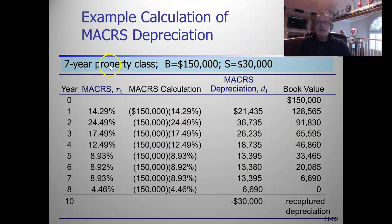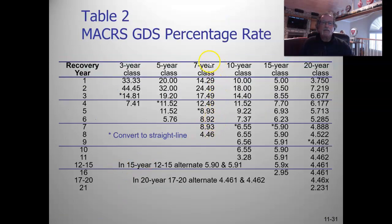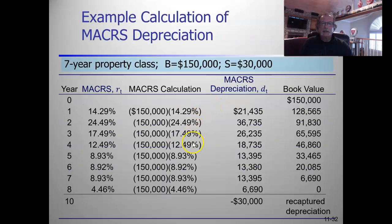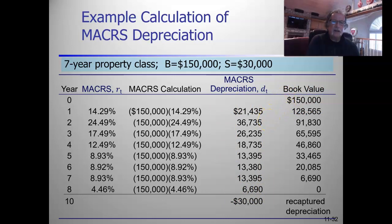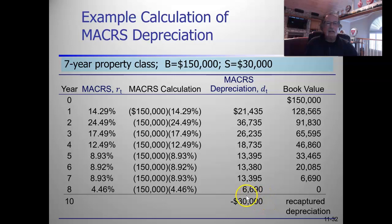For a seven-year property with a cost basis of $150,000 and a salvage value of $30,000, multiply $150,000 by the MACRS percentages from the seven-year column to get the depreciation for each year. The book value declines each period using the formula: book value equals cost basis minus the cumulative sum of depreciation. MACRS depreciates down to zero - so if you sold this asset for $30,000 at the end of its life, that $30,000 would be recaptured depreciation.